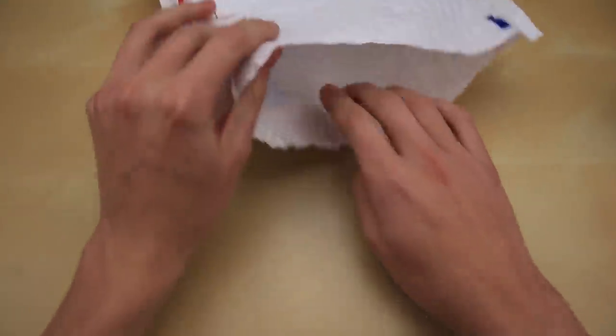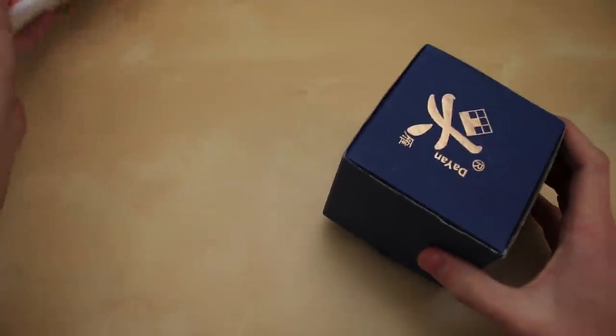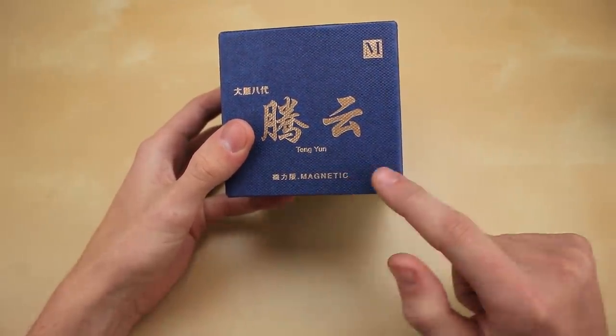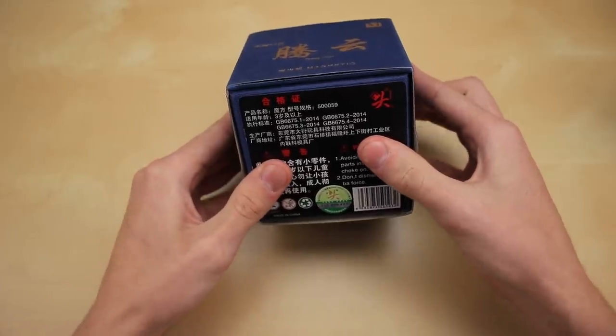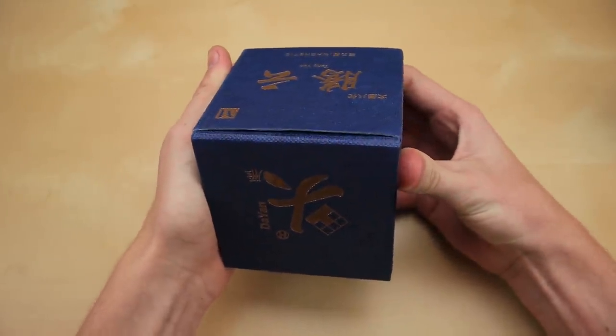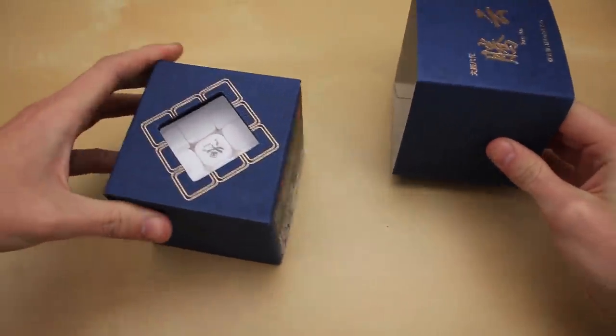So now they've released a new 3x3, which should hold up a little bit better in the modern market. As you can see here, it's called the Tanyun M, so of course it is magnetic. I believe it is their first magnetic 3x3 they've made. So if we can figure out how to open this package... And there we go, finally. That was one of the hardest cube boxes I have ever had to open.